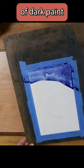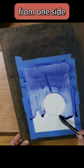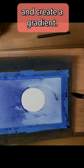Then mix a big puddle of dark paint and start the wash from one side of the paper and create a gradient.